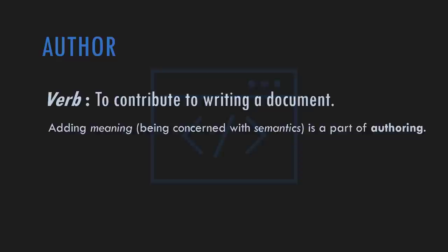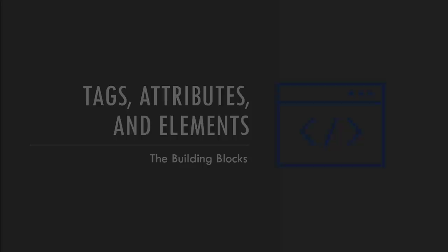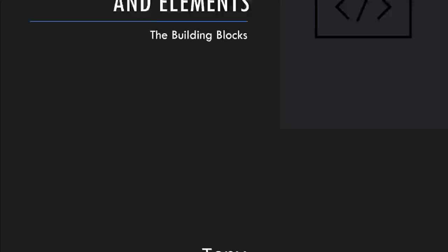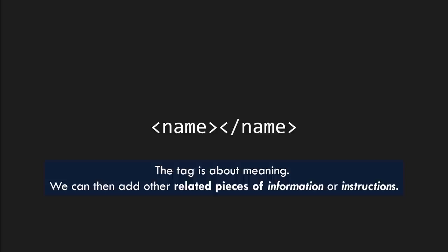Let's dig more into the building blocks of markup: tags, attributes, and elements. Let's imagine we have a document and we have my name. We're going to mark it up with some tags. This tag is about meaning. But we can then also add other related pieces of information or instructions to a tag. I should point out that right now we're just inventing our own markup language as an example - this isn't HTML yet, we're just getting the concepts.